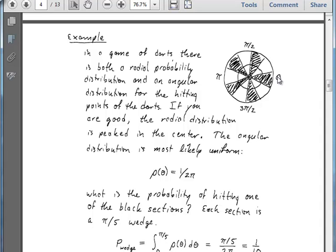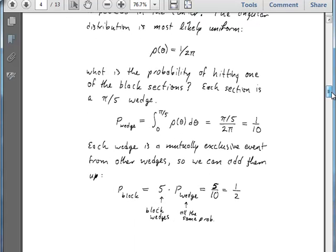So if we want to hit a particular wedge, then we can ask, what is its probability? So we're going to integrate from zero to pi over 5 with our rho of theta, our probability density, that is. And that's going to give us the probability of falling in a specific wedge, specifically the first wedge here. So that comes out to be pi over 5 over 2 pi, which is 1 tenth.